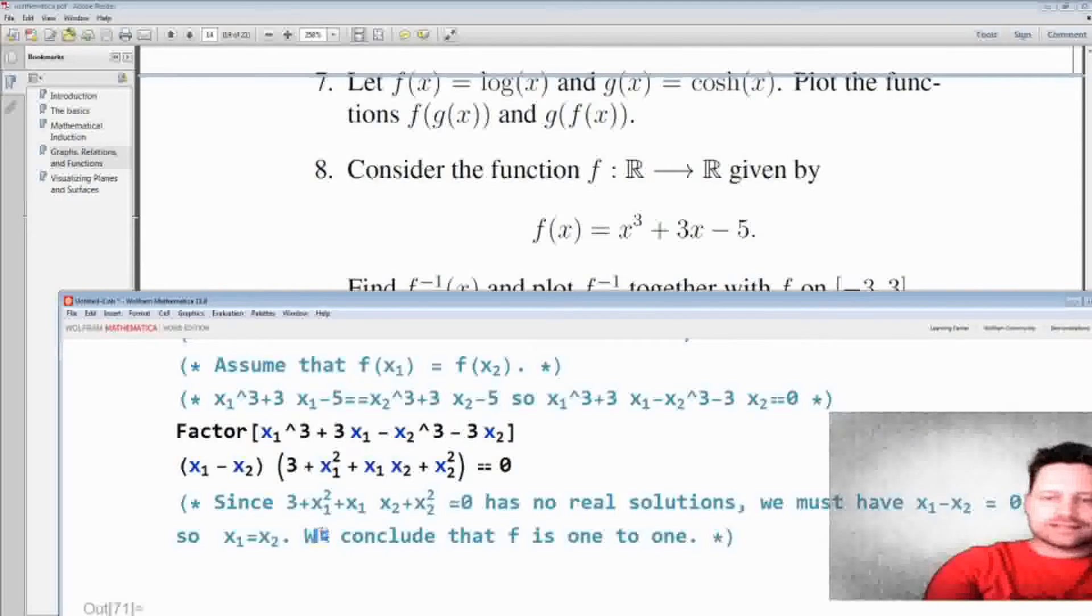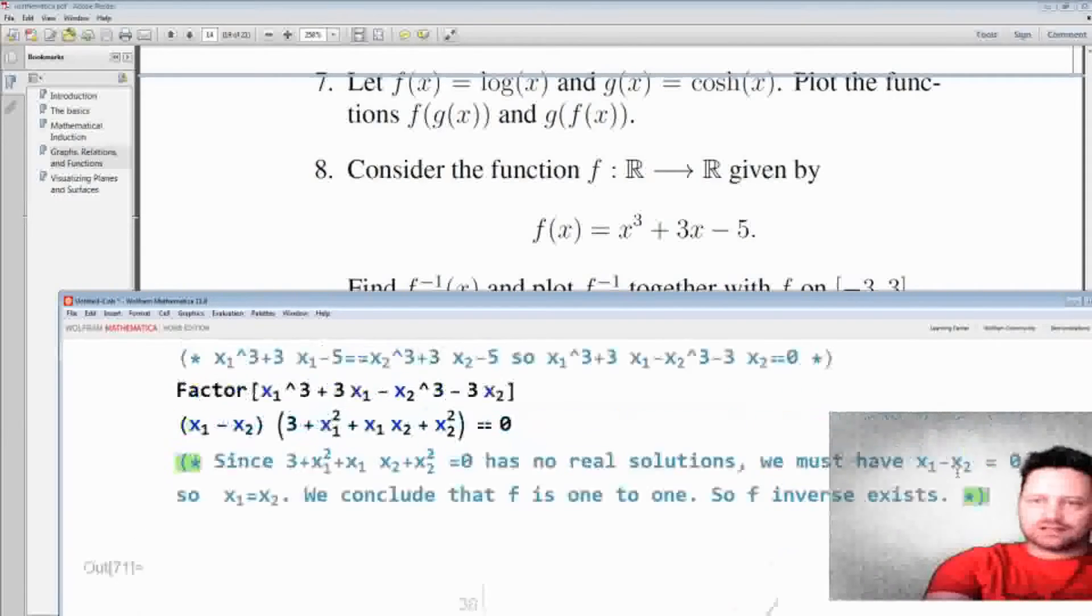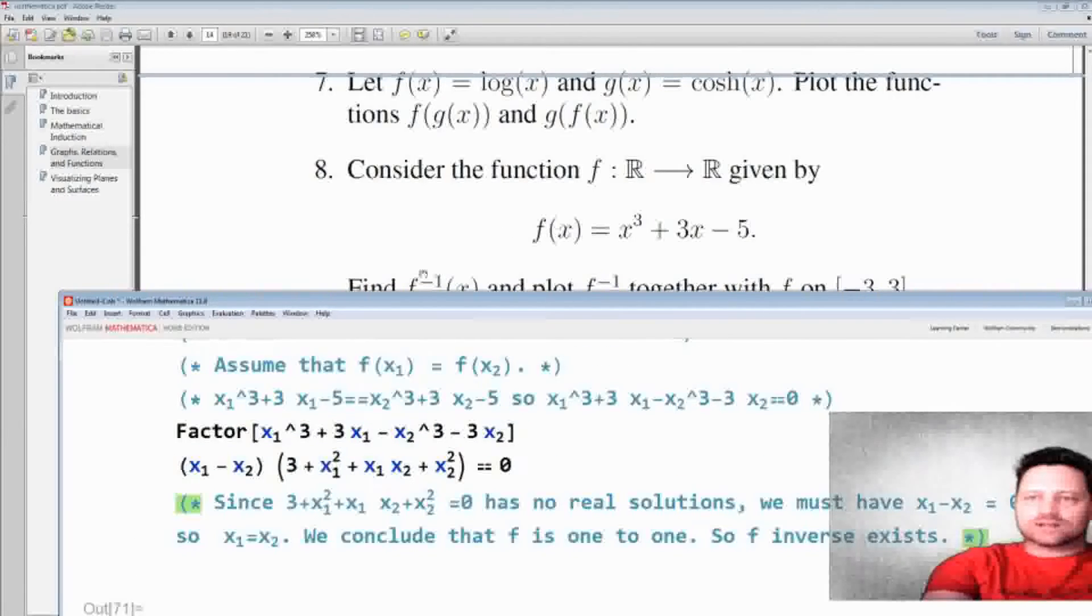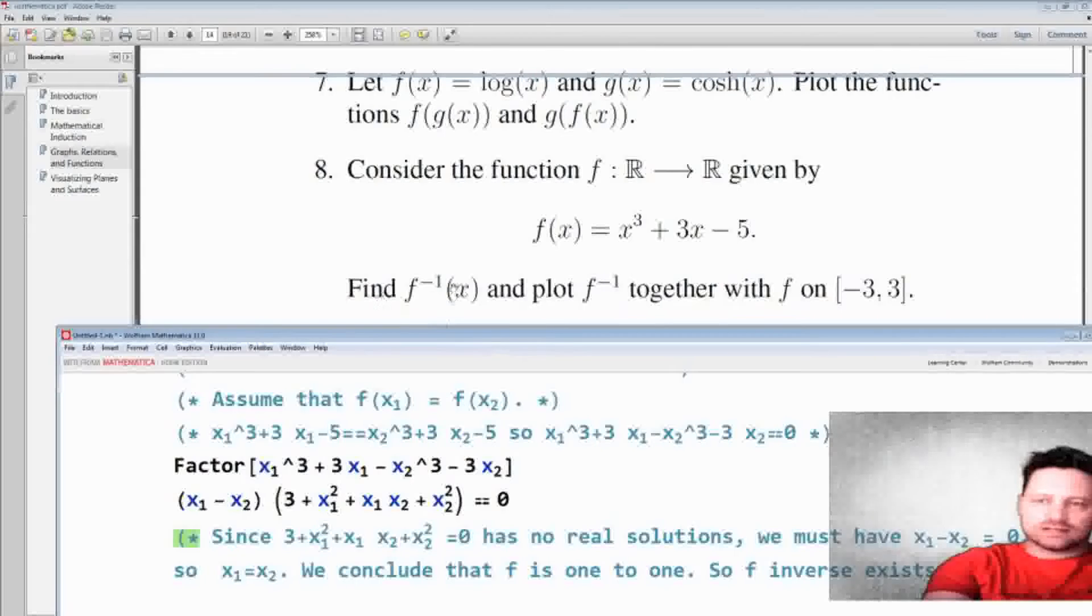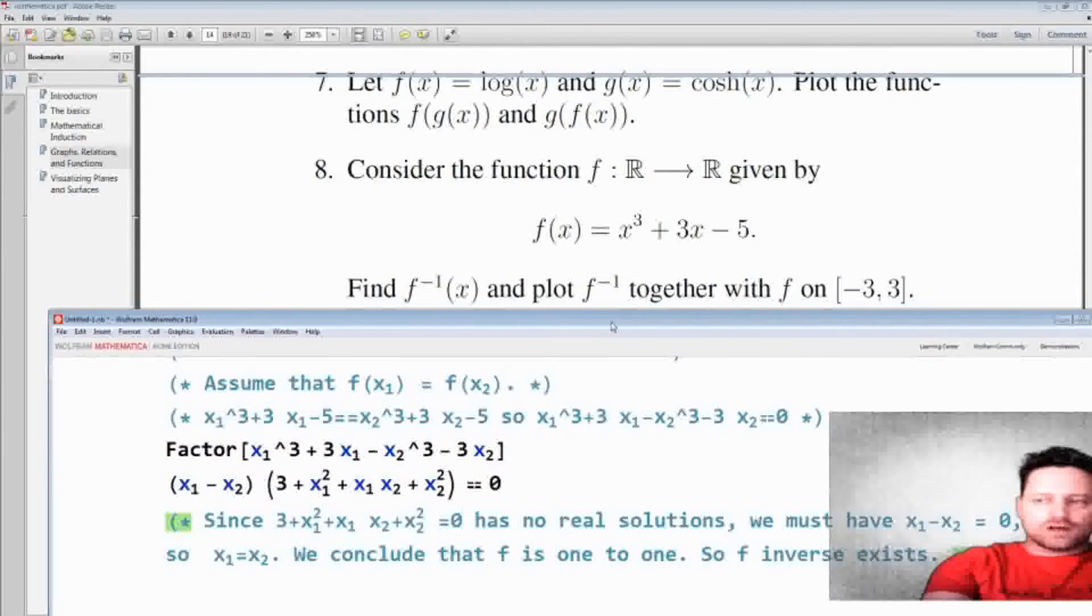So what we've demonstrated there is that this function is one to one. We conclude that f is one to one. And hence its inverse exists. So f inverse exists. And since its inverse exists, we can seek to find it. So the next thing we want to do is find it. So we'll do this part of the question: find f inverse.